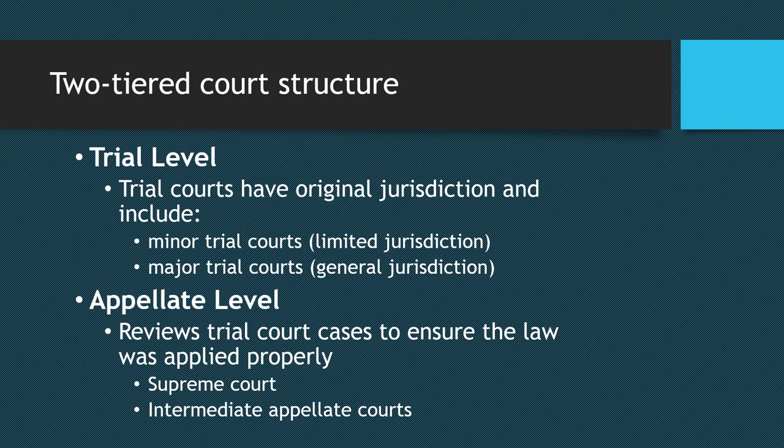Like the U.S. judicial system, state courts have a two-tiered structure. Trial courts have original jurisdiction. Minor trial courts, like traffic court or mayor's courts, have limited jurisdiction, meaning they only hear one limited type of case. Major trial courts hear all types of criminal and civil trials. The second level is the appellate level — appellate courts review cases that have already been heard to be sure the law was applied properly.